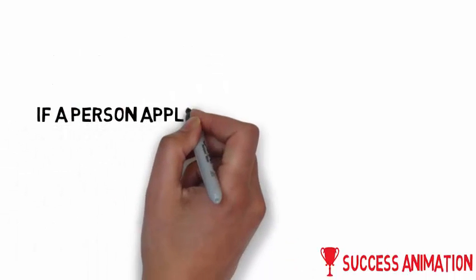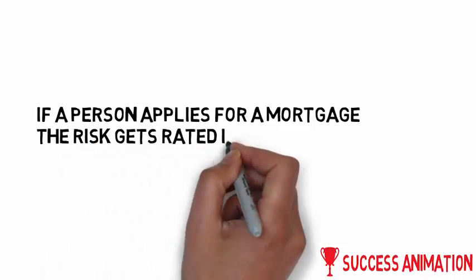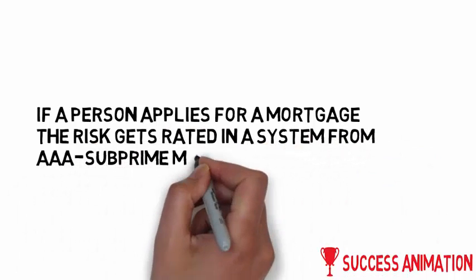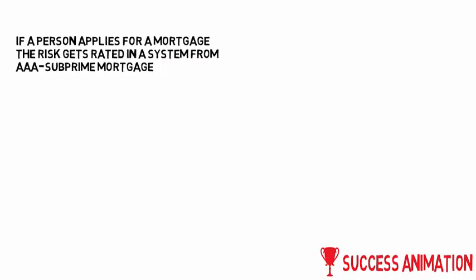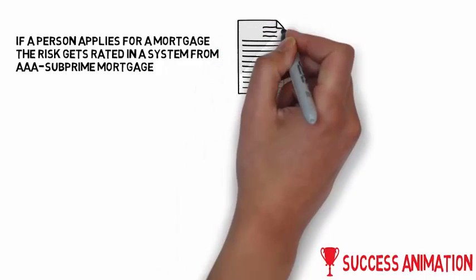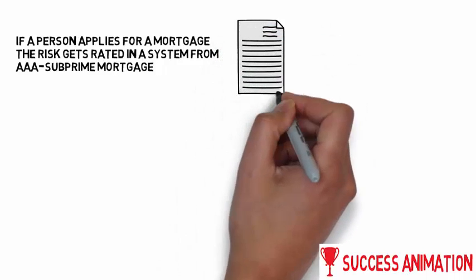But first things first, if a person applies for a mortgage, the risk gets rated in a system from AAA to subprime mortgage. AAA is the best and subprime mortgage is the worst.